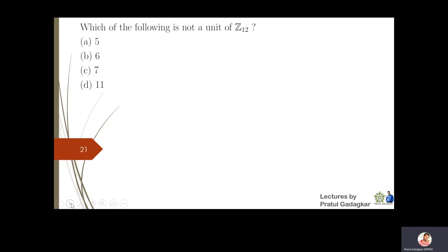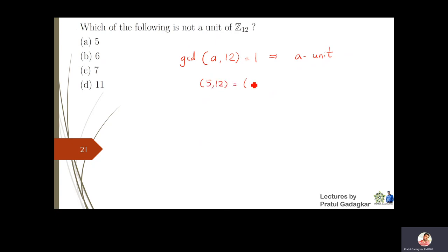The last question: which of the following is not a unit in Z12? An element a is a unit if gcd(a,12)=1. Checking: gcd(5,12)=1, gcd(7,12)=1, and gcd(11,12)=1, so 5, 7, and 11 are all units. Therefore 6 is not a unit in Z12. With this, the second set of objectives is complete.